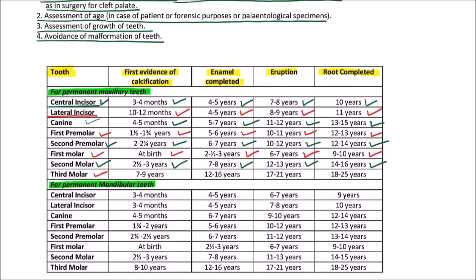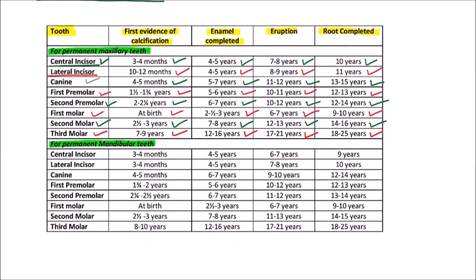For the maxillary third molar, the first evidence of calcification occurs by 7 to 9 years, enamel is completed by 12 to 16 years, eruption occurs between 17 to 21 years, and the roots are completed between 18 to 25 years. This is the last tooth to erupt in the permanent dentition of the maxillary arch.